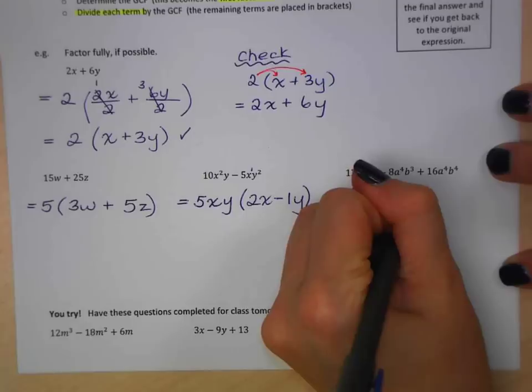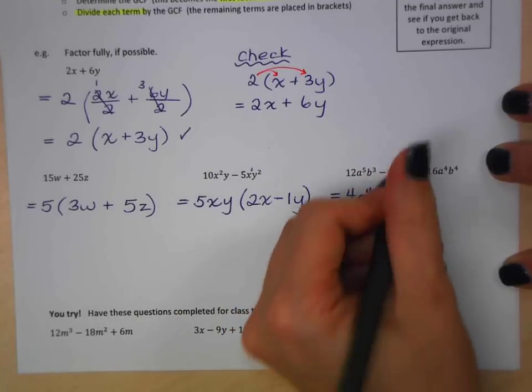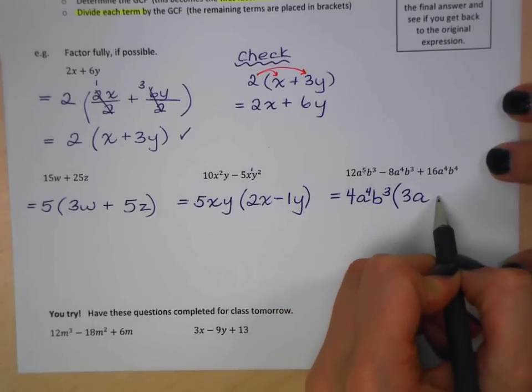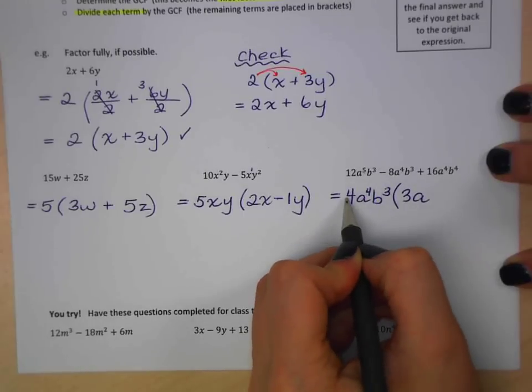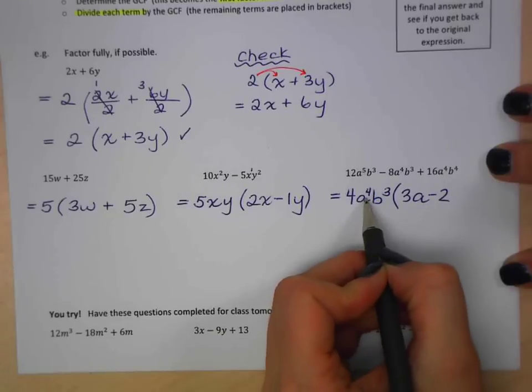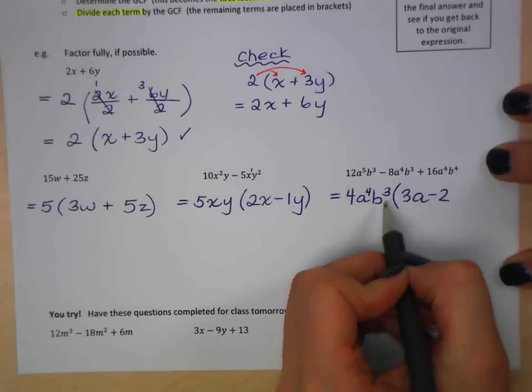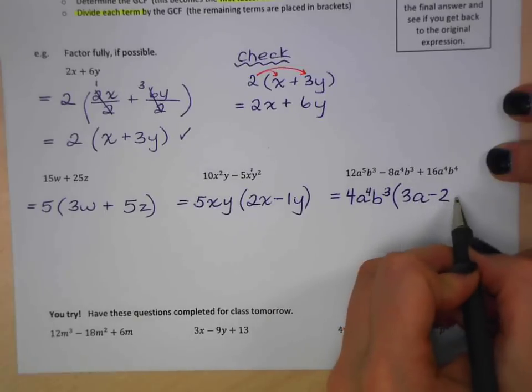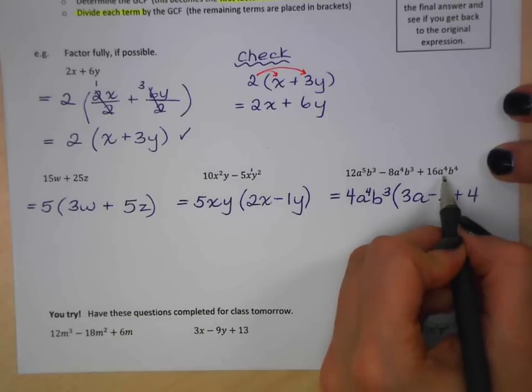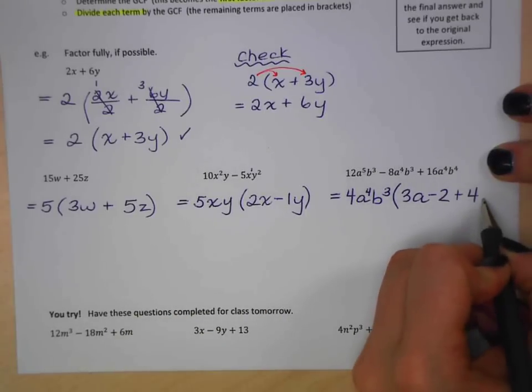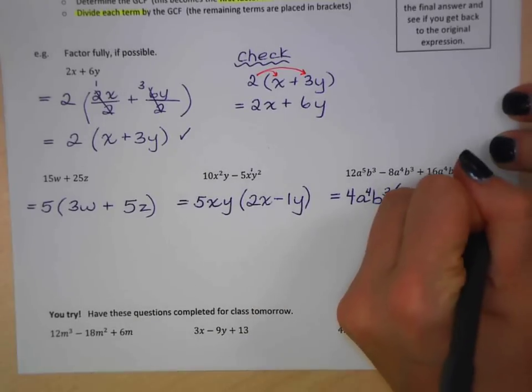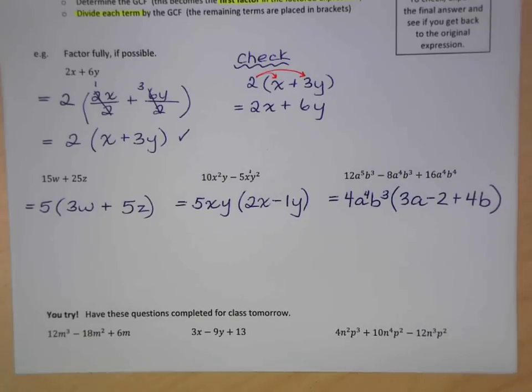Now what's left? 12 divided by 4 is 3. A to the 5 divided by A to the 4 is A. B to the 3, B cubed divided by B cubed is just 1. So I don't need to write anything else. Negative 8 divided by 4, negative 2. A to the 4 divided by B to the 4 is just 1. So I don't need to write anything. B to the 3 divided by B to the 3 is just 1. Again, that's all I need to write. So my final term, 16 divided by 4 is 4. A to the 4 divided by A to the 4 is 1. So I don't need to add anything here. B to the 4 divided by B to the 3, just leave me with B to the 1. So that is my final expression.